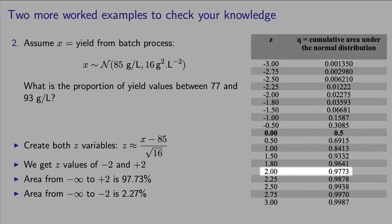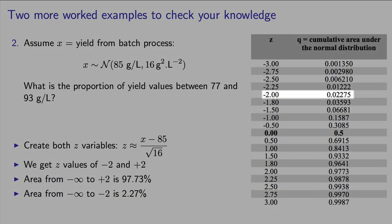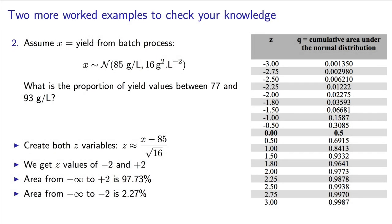The area from minus infinity to plus 2 is 97.73. But we have to subtract the small area at the start, the cumulative area, up to minus 2. So that's 97.73 minus 2.27, in other words, an area of 95.46%. So that's our answer. There's a probability of around 95% of observing yield values between 77 and 93 grams per liter. You should make sure you can follow those calculations. They will get quicker and quicker as you become more comfortable.